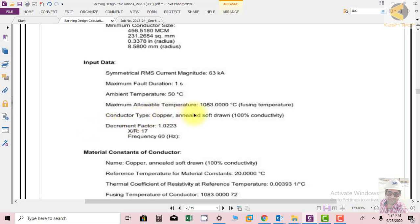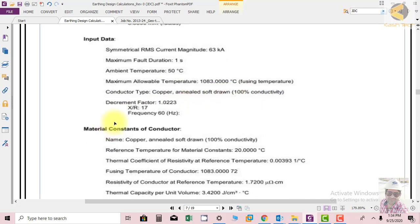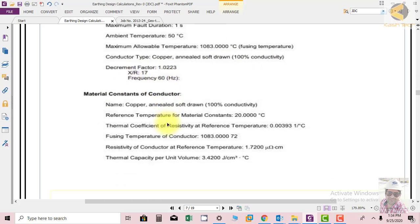Maximum allowable temperature is 1083, which is basically the fusing temperature of copper. Conductor type copper, 100% conductivity, decrement factor 1.023, X over R ratio is 17, frequency 60 Hertz. Material constant of conductor: name is copper annealed soft round, resistivity reference temperature for material constant is 20 degree centigrade, thermal coefficient of resistivity at reference temperature is 0.003931 per degree centigrade.